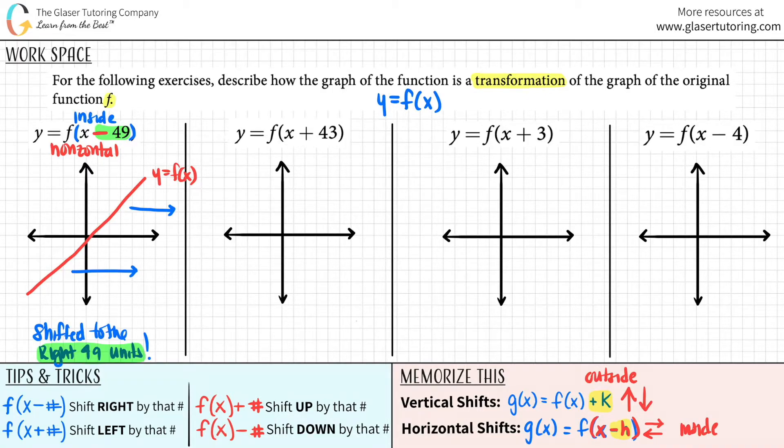Let's try the next one. Well, it looks like it's an inside shift, right? Because the plus 43, the number that you're shifting, is inside the parentheses of where your f of x was. So this has to be a horizontal shift.